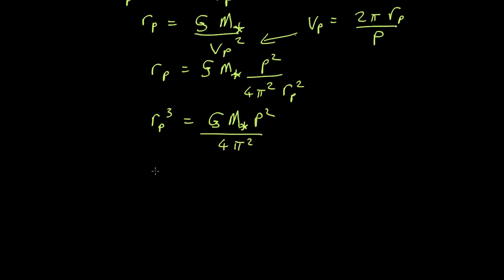So if you take the cube root of both sides we get an equation for r p which is roughly speaking how far the planet is from the star. And that's going to be equal to the cube root of all this. Neat.